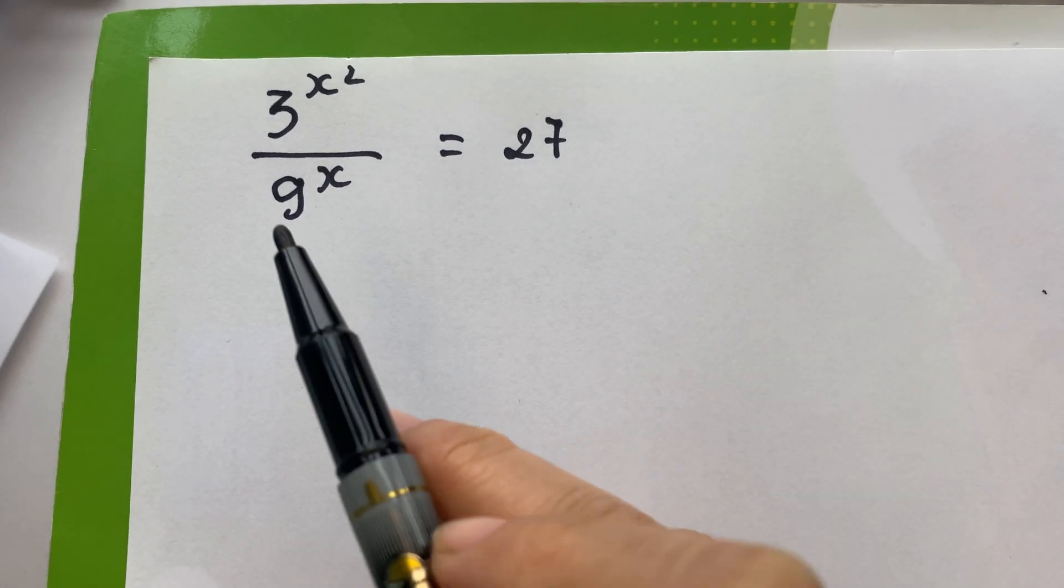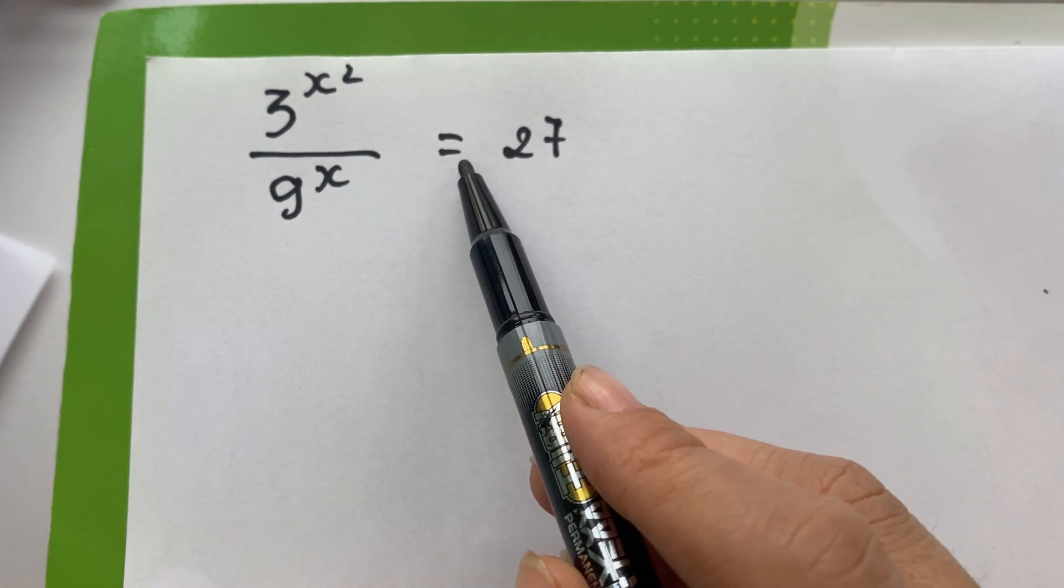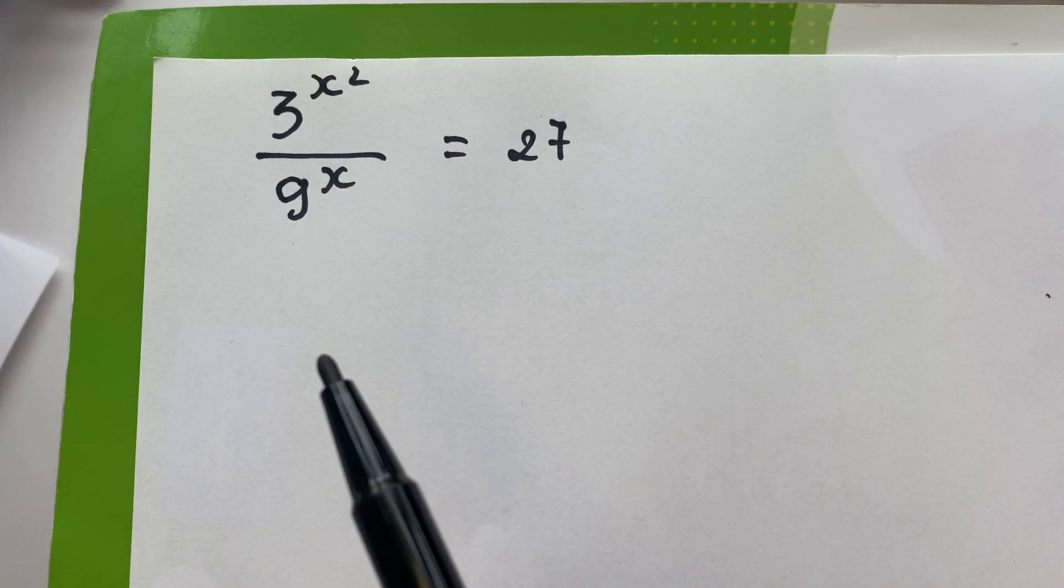Hello everyone, how to solve 3 power x square over 9 power x equals 27. Everyone look at that.